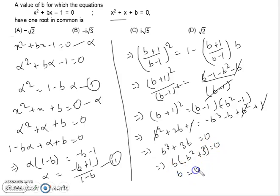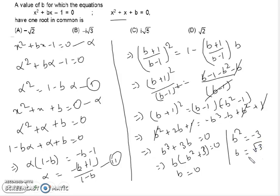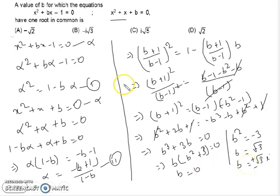Factoring out b: b(b² + 3) = 0. So one value is b = 0, and the other gives b² = -3, meaning b = ±i√3. So the correct answer is option B. Thank you and have a nice day!